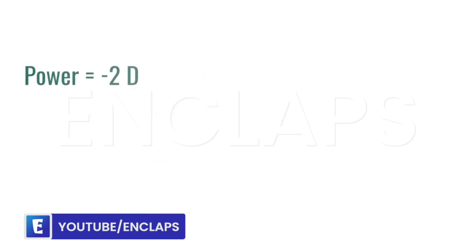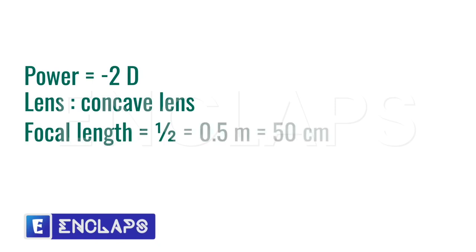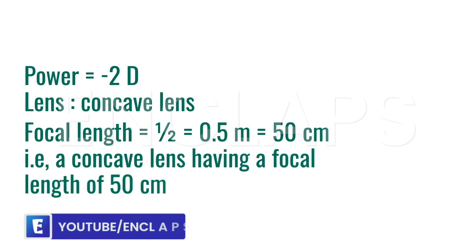If the power was negative 2 diopters, the lens will be a concave lens and the focal length will be 1 divided by 2 which is equal to 0.5 meters or 50 centimeters. That is a concave lens having a focal length of 50 centimeters.